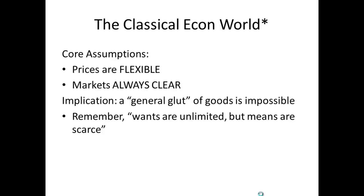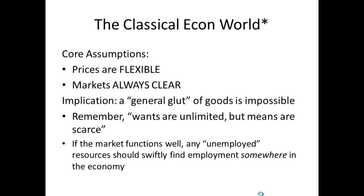We could have too many of one kind of good relative to another. Let's say we have too many cars and not enough houses. The price of cars is going to go down, and the profit rate on producing cars is going to go down. Entrepreneurs and capitalists are going to quickly shift capital investment away from cars and into houses. And when they shift capital investment, that'll shift employment as well. So we should never have a long-term decline in production across the economy, in what I'll call the naive classical view.